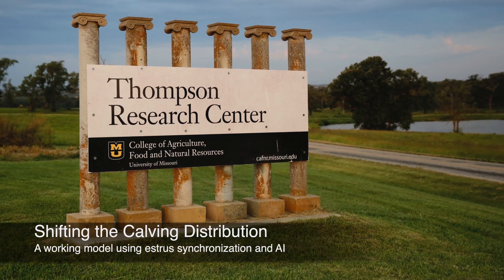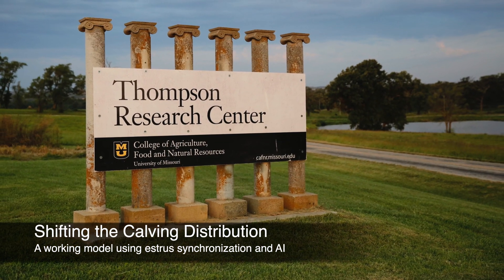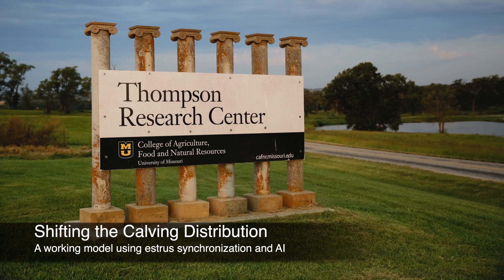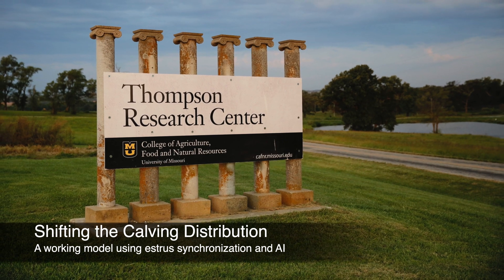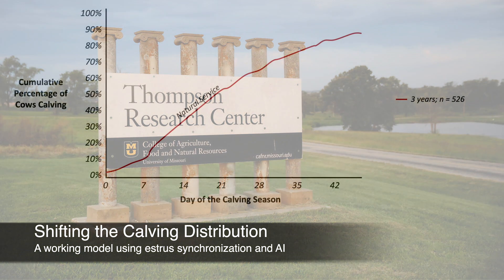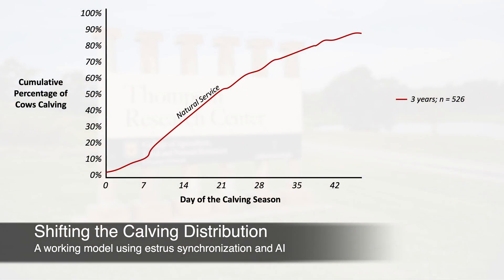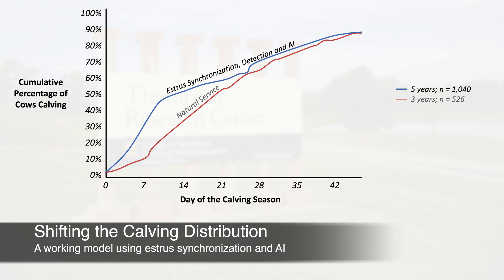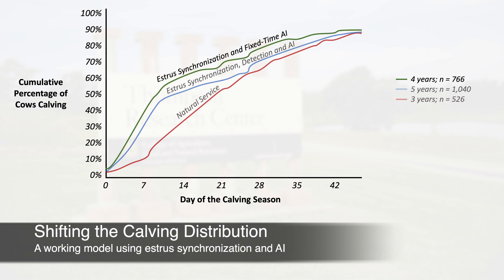Several years ago, we implemented an estrous synchronization and AI program at the University of Missouri Thompson Research Center. And even though this herd's natural service program was well managed, we found we shifted the calving distribution earlier by using estrous synchronization, and even earlier using estrous synchronization and timed AI.